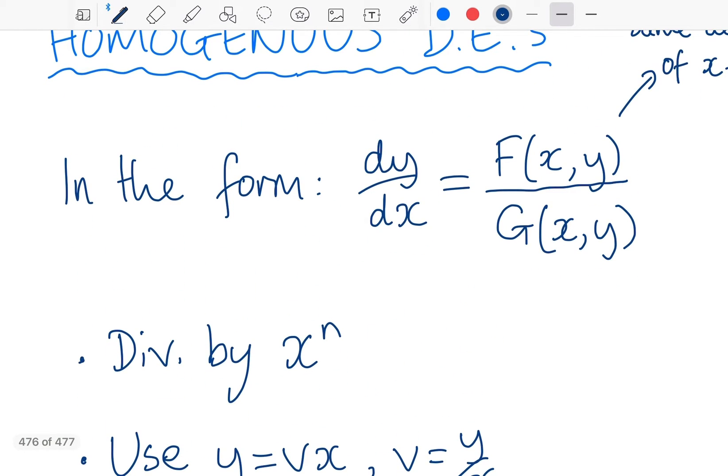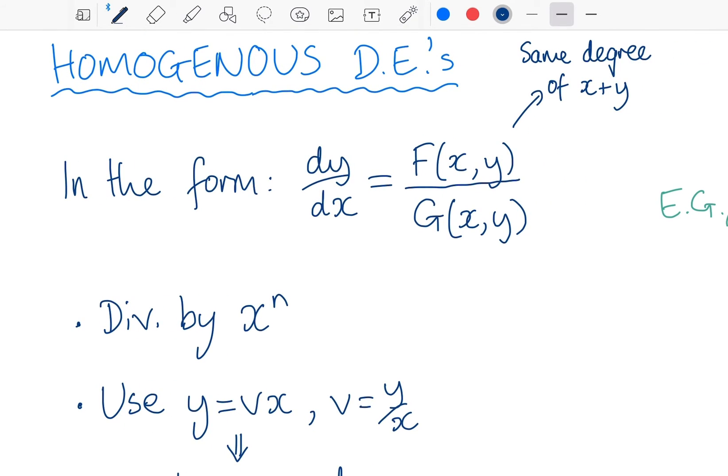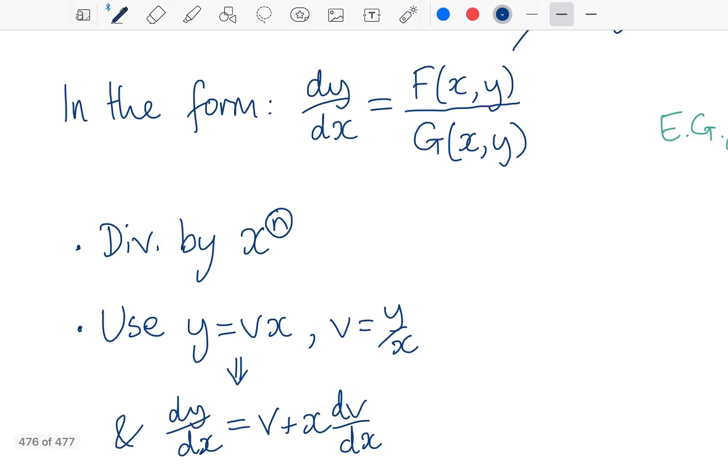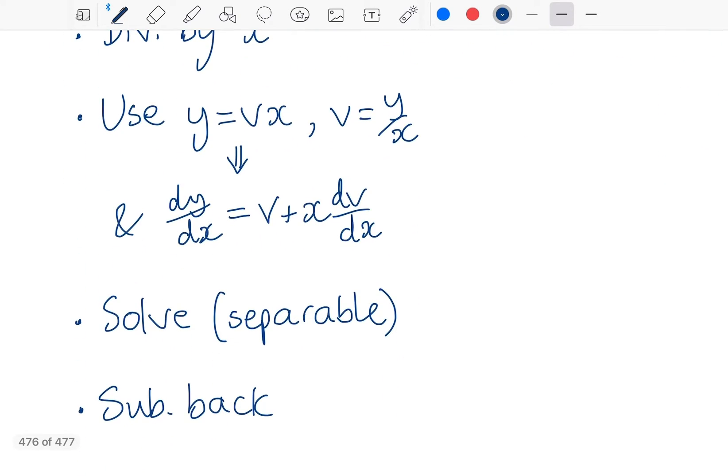So the method you're going to use to solve these is that you are going to take that combined power n and you're going to go through term by term top and bottom and divide every term by x to the power of n. And this does something interesting in that every term will now be something times y over x or something times y over x squared or cubed so it will now essentially be a function of y over x. And you're going to use this substitution here y equals vx or in other words v equals y over x.